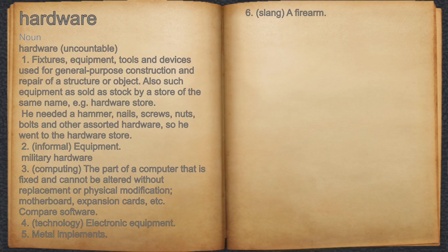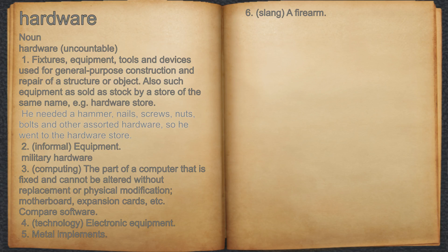Hardware. Noun. 1. Fixtures, equipment, tools and devices used for general purpose construction and repair of a structure or object. Also such equipment as sold as stock by a store of the same name, e.g. hardware store. For example, he needed a hammer, nails, screws, nuts, bolts and other assorted hardware, so he went to the hardware store.